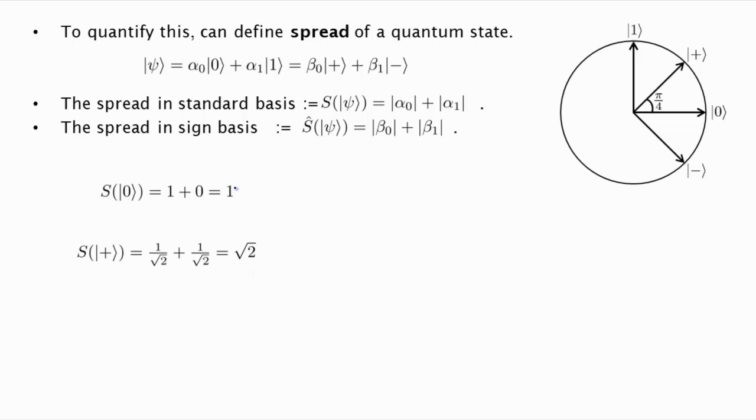So the claim is that the only way the spread can be small, that it can be 1, is if you know the bit perfectly. And the farther from 1 it is, the more uncertain, the less certain you are about the bit value. The same thing holds for the spread in the plus minus basis. So plus and minus have spread 1, and anything else has larger spread.